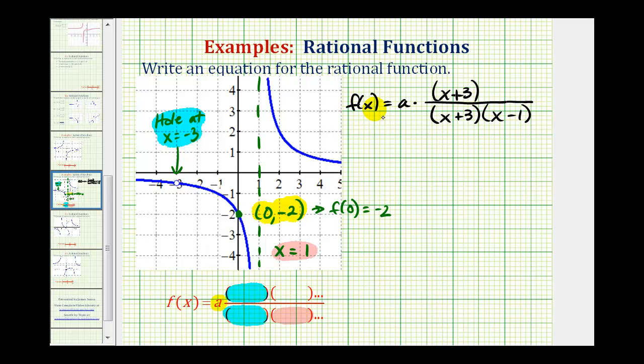So if we substitute zero for x, this function must equal negative two. And if we do this, we can solve for a. f of zero would equal a times—again, if x is zero, this would be three.